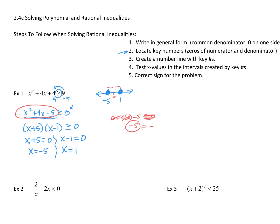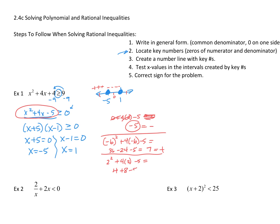Then I test a point over here on the left, like negative 6. So negative 6 squared plus 4 times negative 6 minus 5. Negative 6 squared gives me 36, negative 6 times 4 gives me minus 24, minus 5. So 36 minus 24 minus 5 gives me a positive 7 — so it's positive. Then if I test a number on the right of 1, let's try 2: 2 squared plus 4 times 2 minus 5 gives me 4 plus 8 minus 5, which is 7 — also positive.